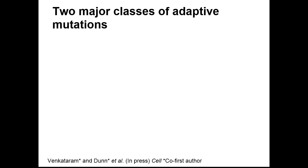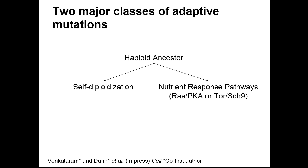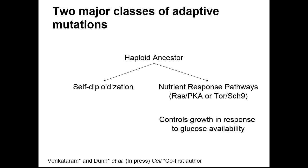We find two major classes of adaptive mutations. We started with a haploid ancestor, and very surprisingly, many clones actually duplicated their genomes to become diploid — something like 250 of the 350 clones we sequenced turned out to be diploid. The other class was haploid clones with mutations in the nutrient response pathways — the Ras-PKA or Tor-SCH9 pathways — which control the growth of these organisms in response to glucose availability. We were evolving these populations in glucose-limited media. We have 80-something clones with independent mutations in this pathway, allowing us to do statistics on their fitness distributions in ways never previously possible.